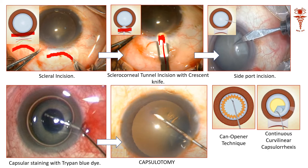We also have to make a side port using a side port knife. A side port incision is necessary because in cataract surgery, certain steps are done through the main port and certain steps through the side port.